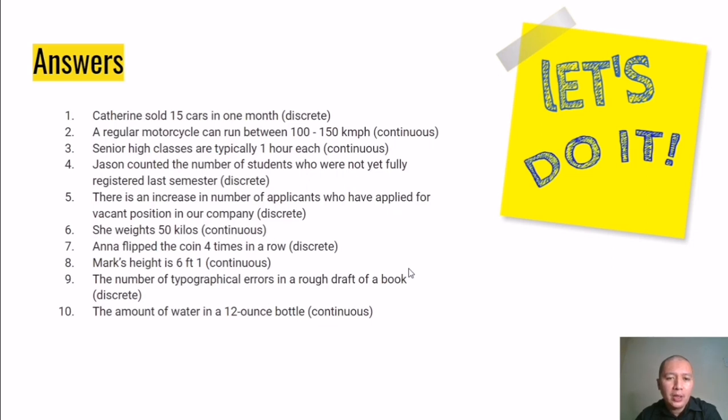Senior high school classes are typically one hour each. This is a little bit of a trick question. The answer is continuous. We may ask why, because it is already given that it is for an hour each. But remember, according to the rule we discussed earlier, when you talk of time, it pertains almost automatically to continuous. What we are saying here is that it is typical, meaning it's not absolute. It may run for an hour, an hour and a minute, an hour and 30 minutes. It will vary. But that is the prescribed time, which is one hour.